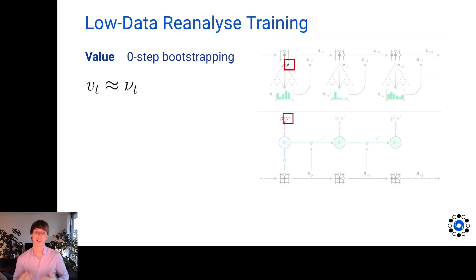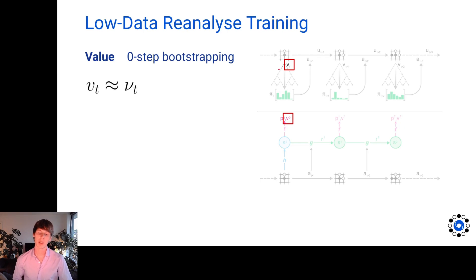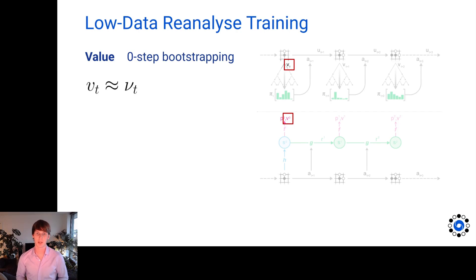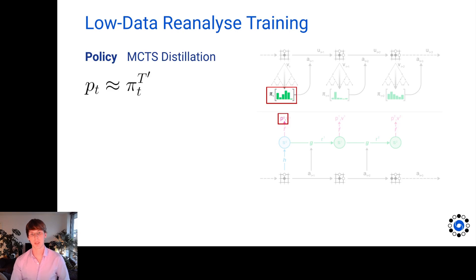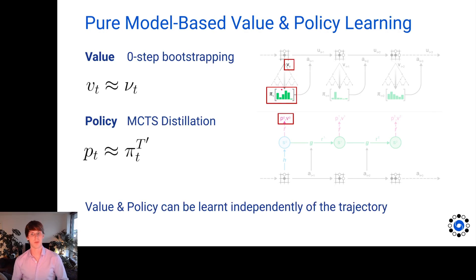Using zero-step bootstrapping allows us to improve value estimates without following the trajectory at all. For the policy, we train to imitate the MCTS visit counts at the root of the search. Using both together gives us pure model-based value and policy learning, completely independent of the trajectory, which can be used even in very off-policy settings.